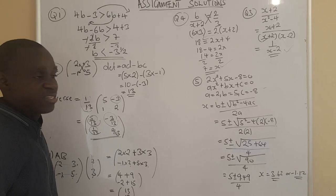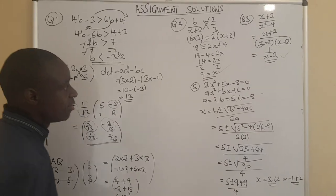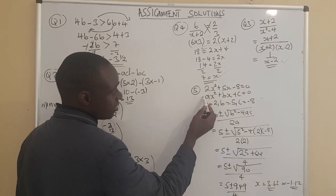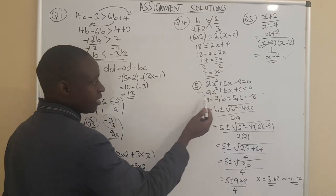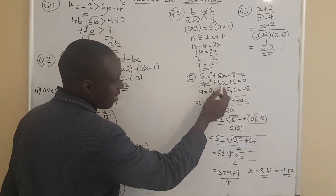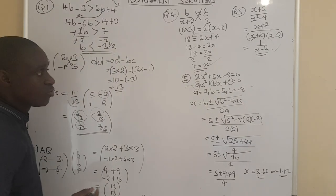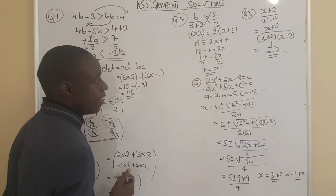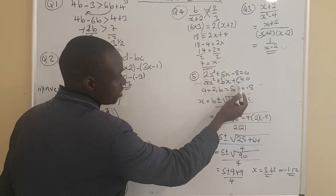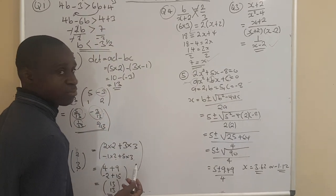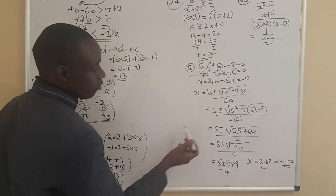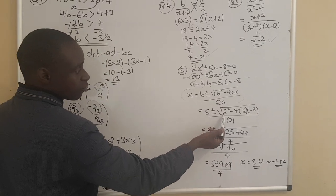Question 5 was a quadratic expression, which features almost all the time in mathematics. We have 2x squared plus 5x minus 8 equals 0. Using the standard quadratic formula where ax squared plus bx plus c equals 0, we identify: a equals 2, b equals 5, and c equals negative 8. Substituting into the formula: negative b is negative 5, b squared is 25, and 4ac is 4 times 2 times negative 8.